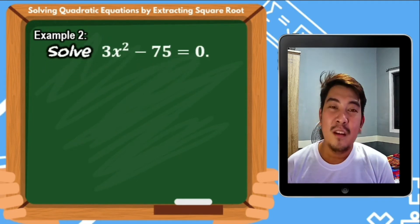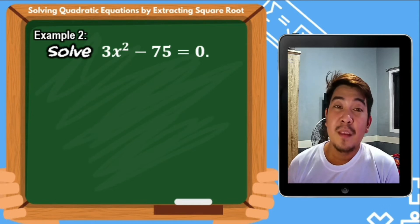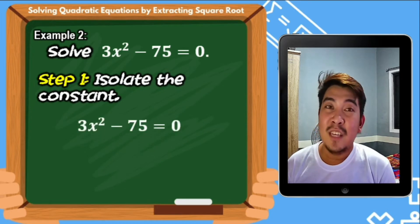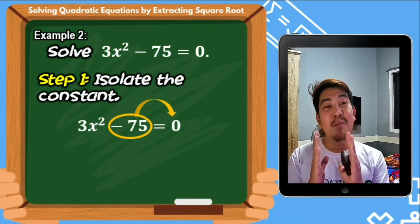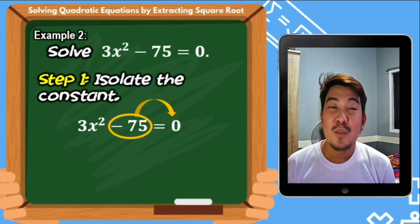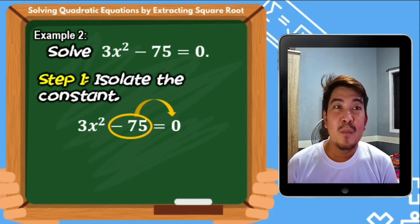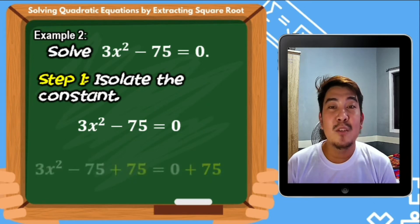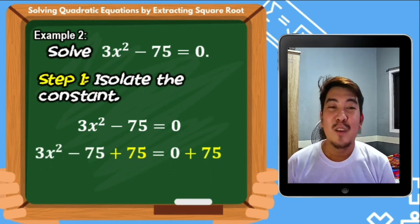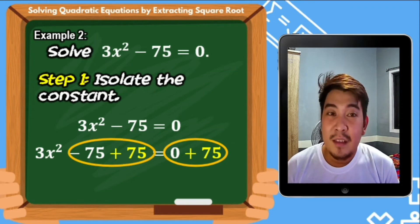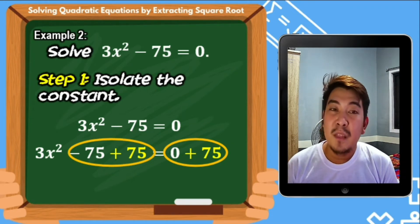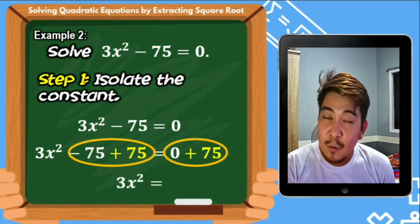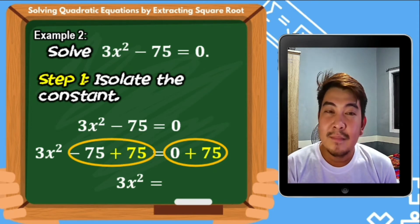Example number 2: solve 3x squared minus 75 equals 0. Step number 1: isolate the constant. The constant is negative 75, so we transfer it to the other side. Using the addition property, we add positive 75 to both sides of the equation. Negative 75 plus 75 equals 0, so what remains on the left side is 3x squared, and on the right, 0 plus 75 gives us 75.